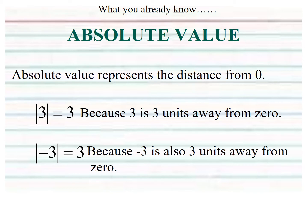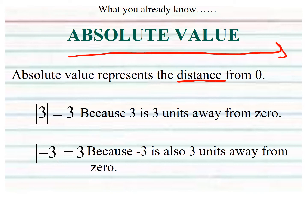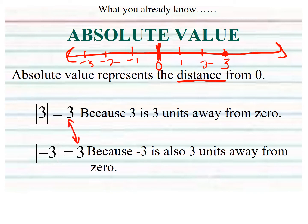What you already know about absolute values is that the absolute value represents the distance a number is from zero. Think back to a number line: negative three, negative two, negative one, zero, one, two, three. The absolute value of three is three because three is three units away from zero. The absolute value of negative three is also three — they're both equal to three because negative three is also three units away from zero.